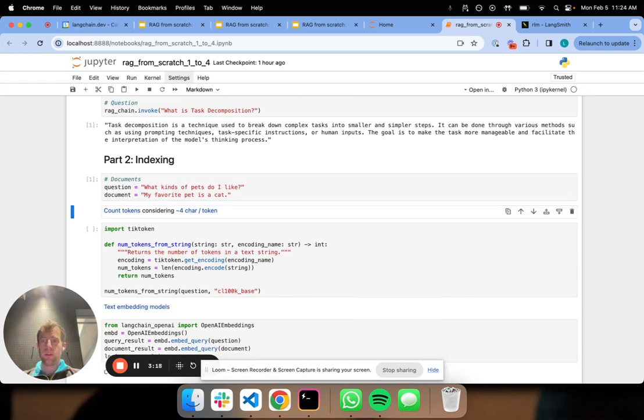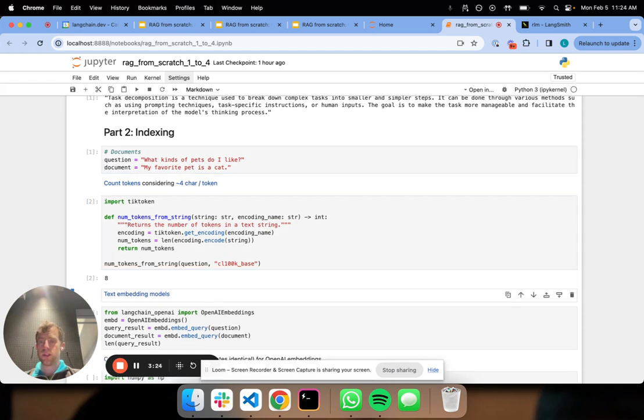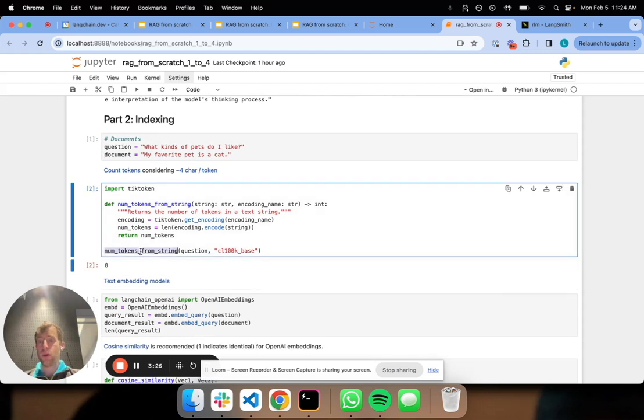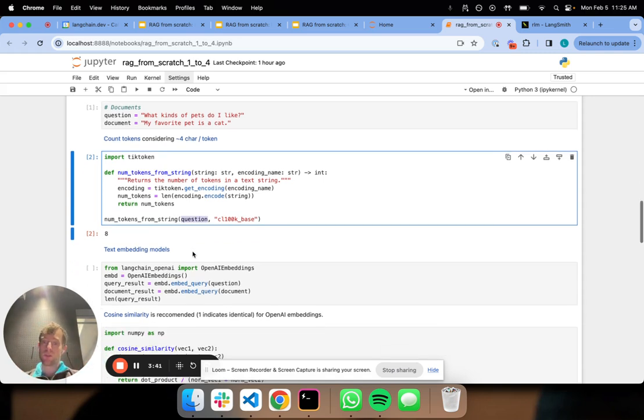And here, what I'll do is I'll deep dive a little bit more on indexing, and I'm going to take a question and a document. And first, I'm just going to compute the number of tokens in, for example, the question. And this is interesting because embedding models and LLMs more generally operate on tokens. And so it's kind of nice to understand how large the documents are that I'm trying to feed in. In this case, it's obviously a very small question.